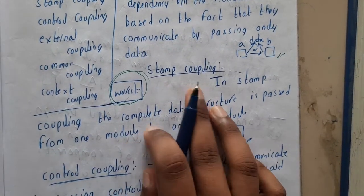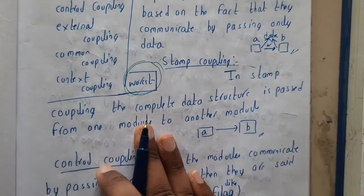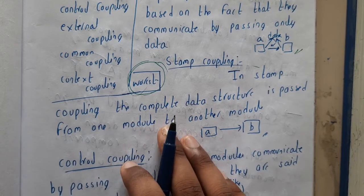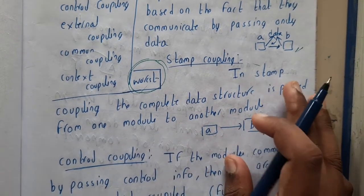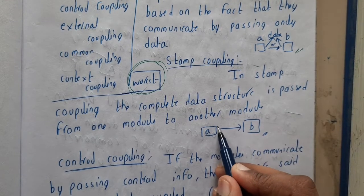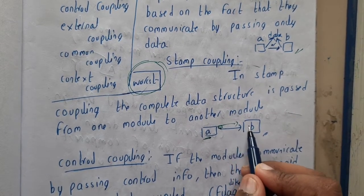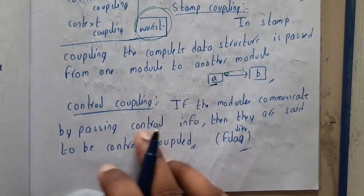The second type of coupling is stamp coupling. In stamp coupling, the complete data structure is passed from one module to another module. In this situation also we can consider it is a good one. The data structure or data which is collected in A will be sent as input to B. Here also we are not having so much issues.